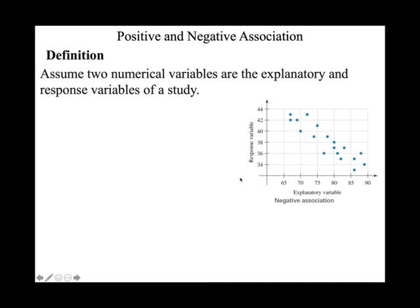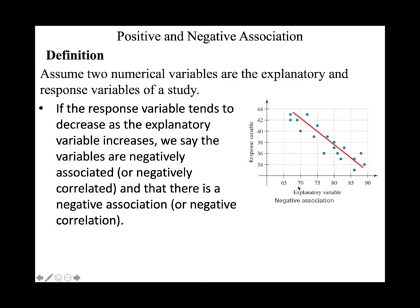Looking at another scatter plot: we can draw a straight line and all points are around that line, so there is a linear correlation. Now determine if it is positive or negative. The slope is decreasing — going downward — so it is a negative slope. Therefore there is a negative linear correlation.